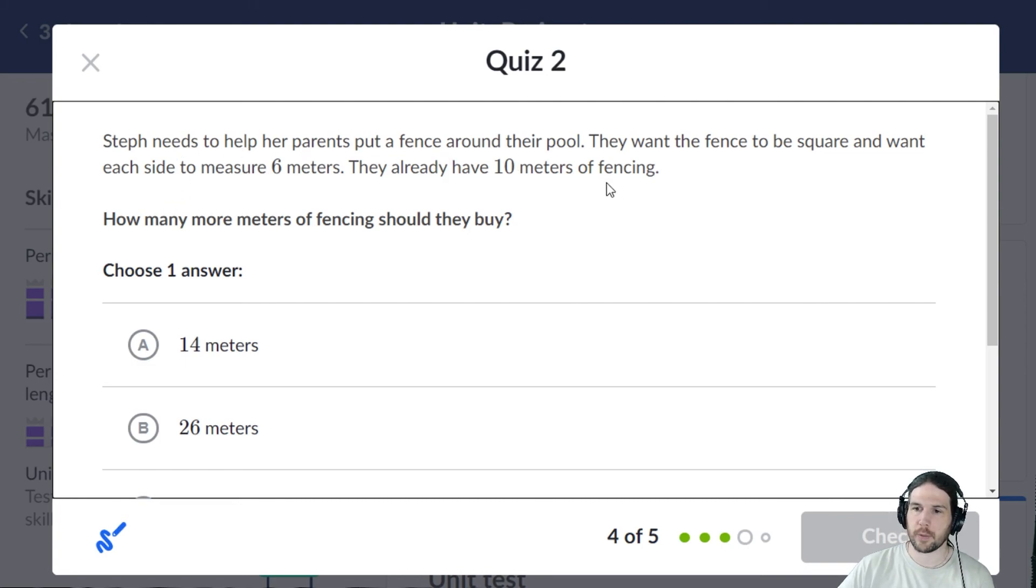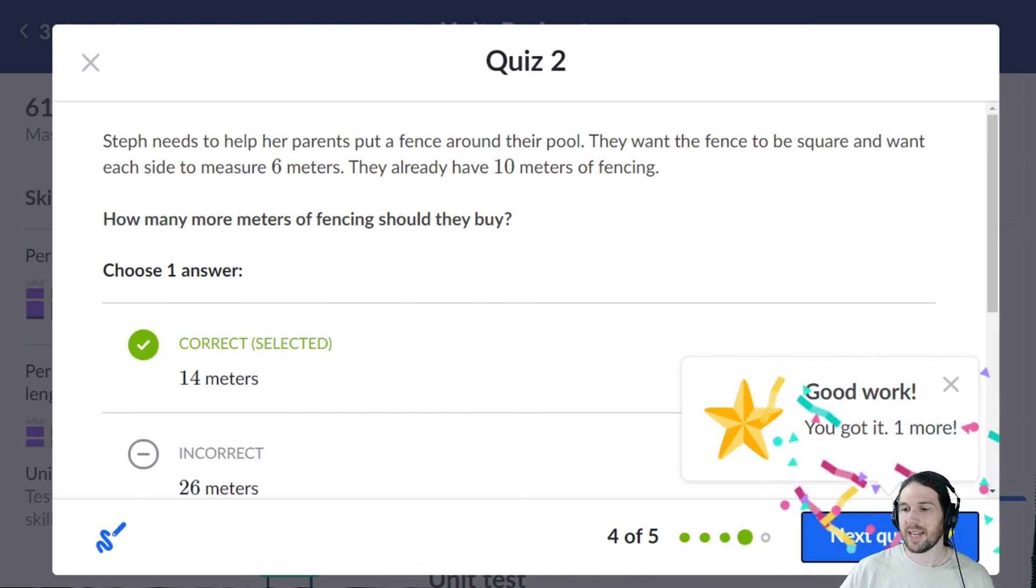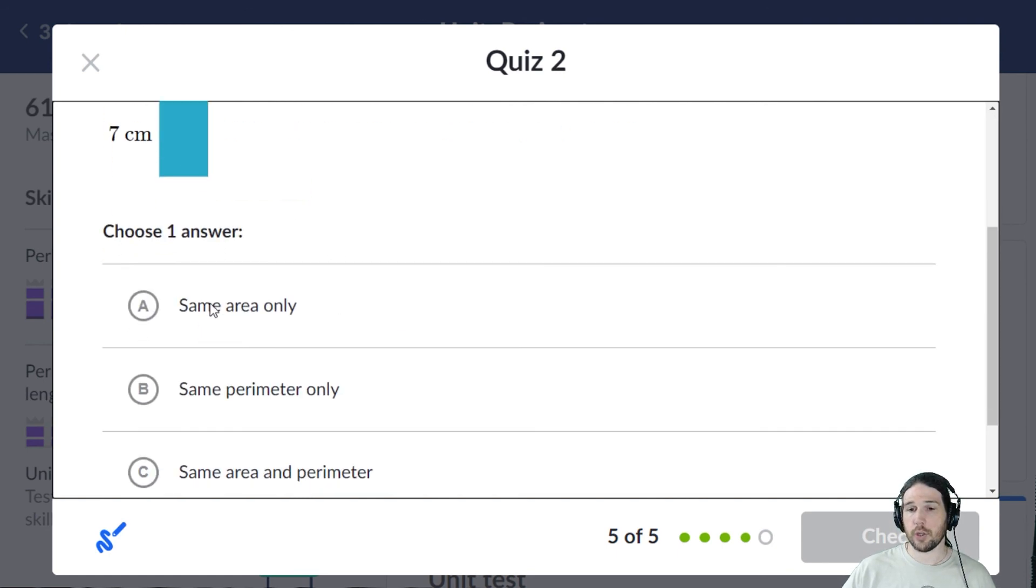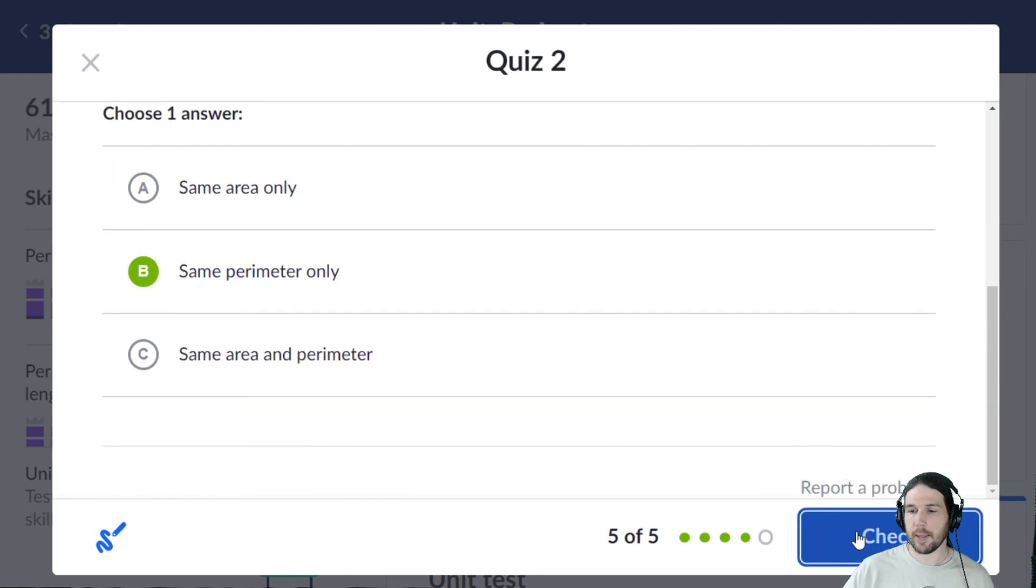Steph needs to help her parents put a fence around their pool. So a fence around the pool. Again, there's that word around. Around probably means perimeter. They want the fence to be square. Each side is six meters. Six times four then is 24. They already have 10 meters. So 24 minus 10 is 14 meters. Again, I'm kind of blitzing through the quizzes. I think you've got the point by now. Same area, same perimeter, or both? 28 and 18, they clearly do not have the same area. 9, 18, 20, 22. 7, 11 times two is 22. They do have the same perimeter. They do not have the same area. That's quiz two.